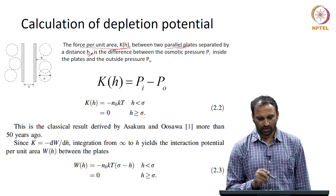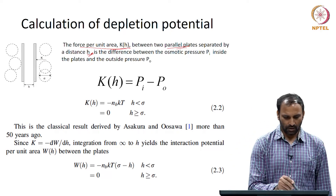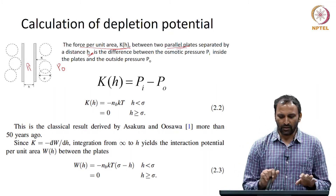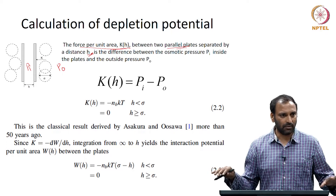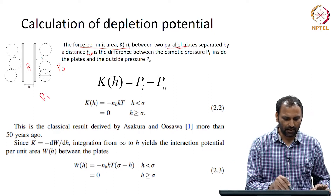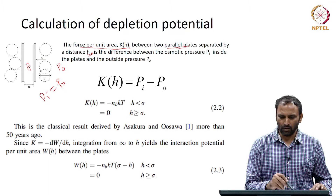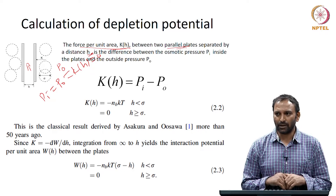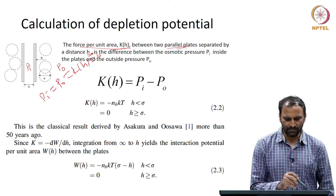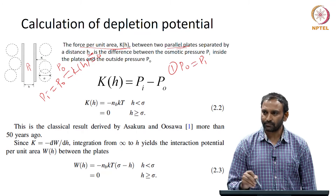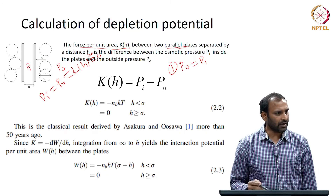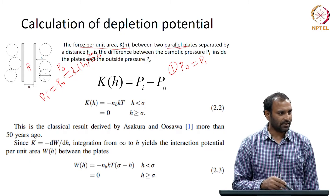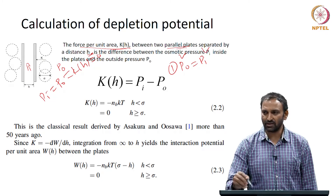When the plates are sufficiently far apart, Pi would be equal to P0 and essentially K(h) is going to be 0 — there is no force pushing them toward each other. Case 1: P0 equals Pi, there is essentially no force because on average the number of polymer molecules on either side is the same, so osmotic pressure inside and outside are equal.